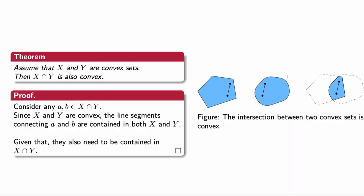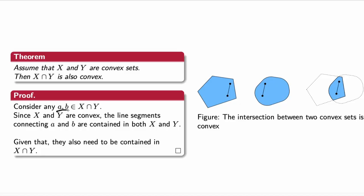Say that we have two convex sets X and Y, then their intersection is also a convex set. This can be very easily proven: if A and B are two points in this intersection, they are clearly also in X and at the same time in Y. If X and Y are two convex sets, the line segment between A and B is contained in both X and Y, which proves that the intersection of two convex sets is also a convex set.